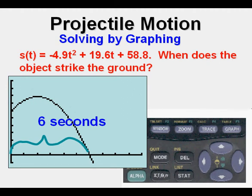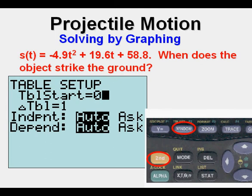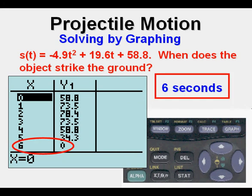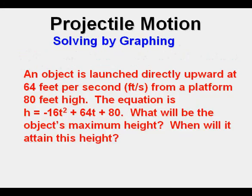The second thing we can do is check out our table view by going to second window, making sure our table start is set to zero. Second graph or table view, we can go down and see that at six seconds the object does hit the ground. Let's look at our second problem.